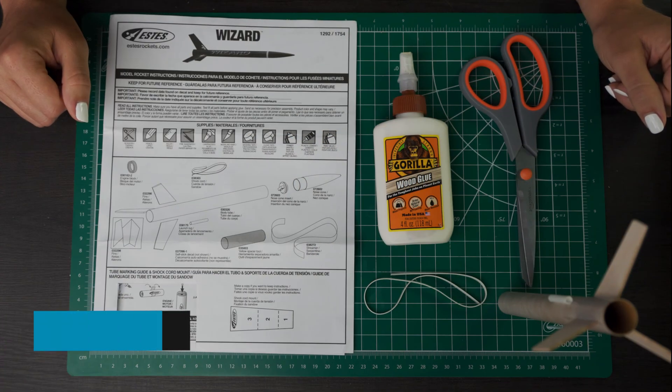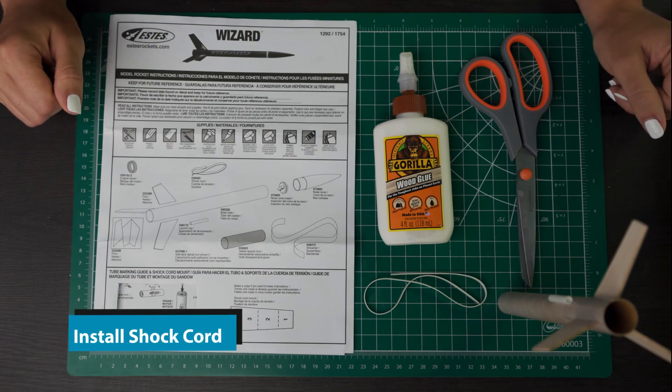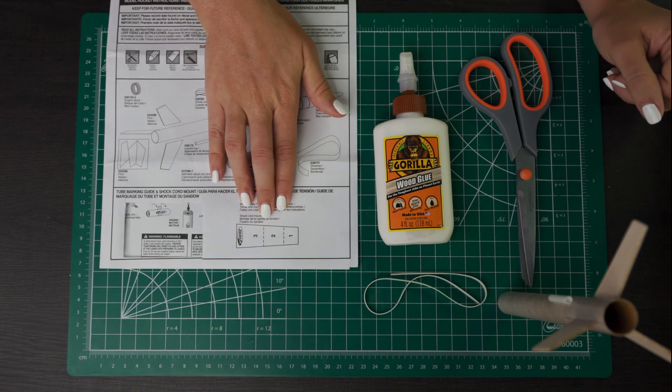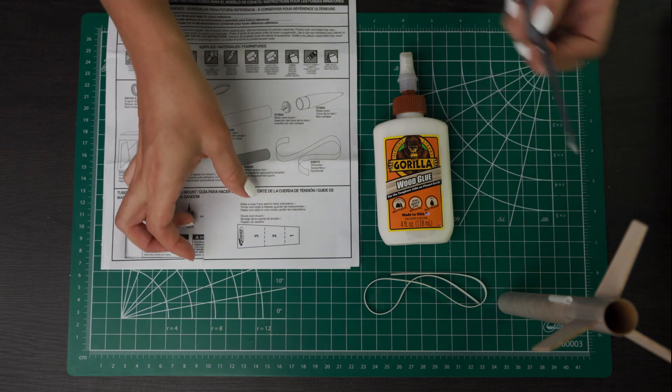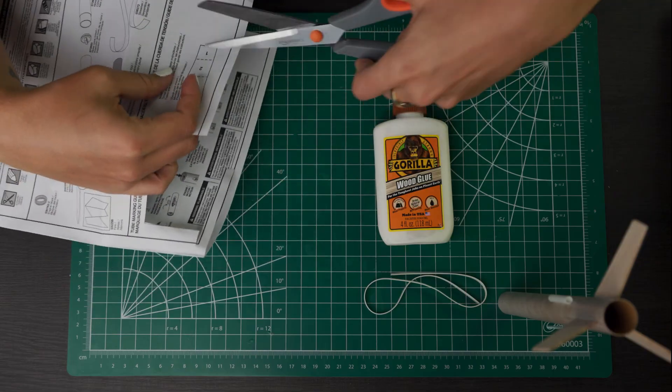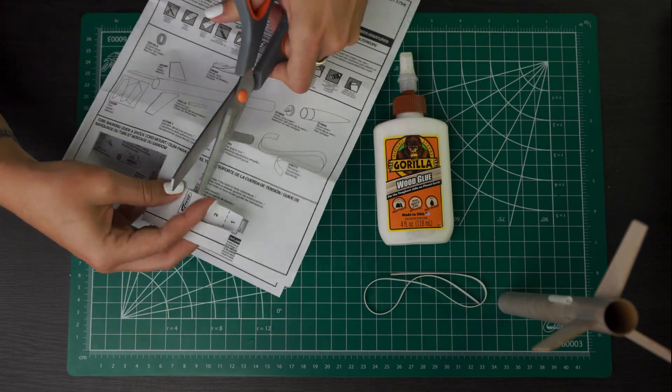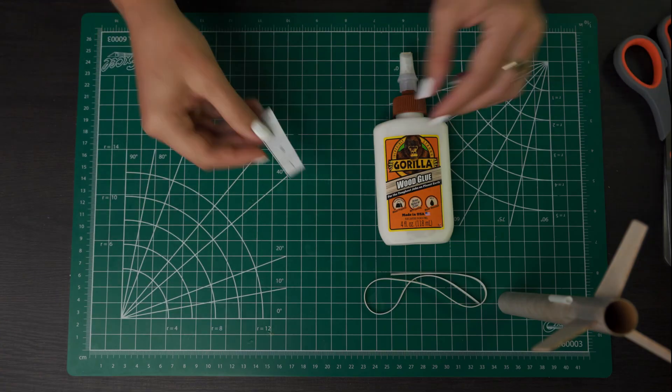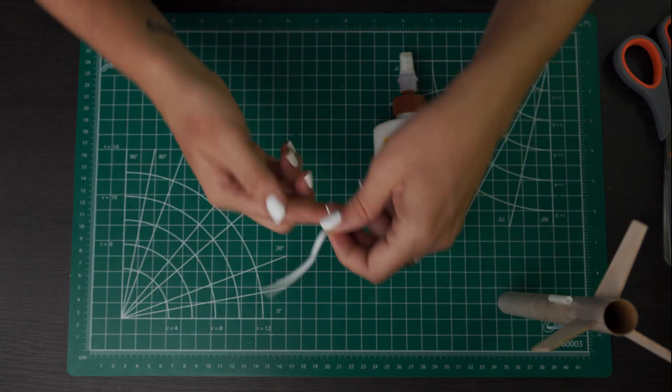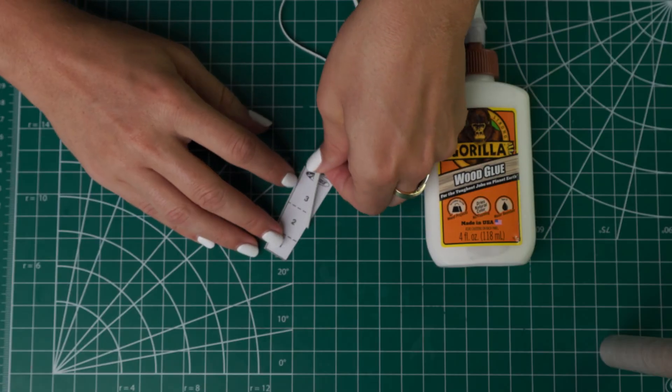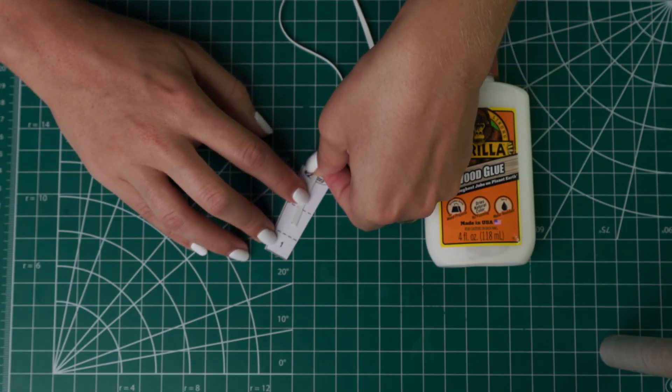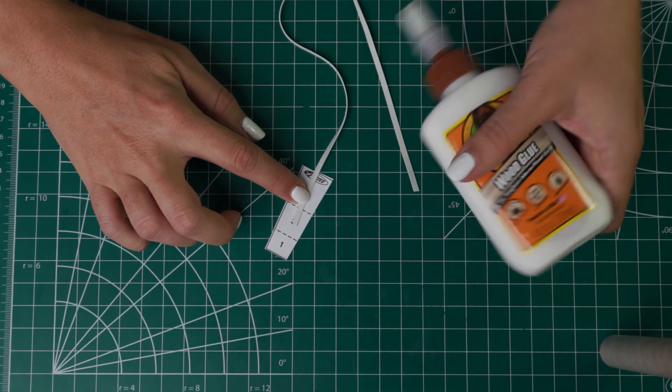Now we are going to install the shock cord. First you'll need the shock cord mount from the front page of your instructions, you can go ahead and cut that out. Now you're going to take just one end of the shock cord, lay it on here on the number two and you'll just put a bit of glue there and then fold the one over.